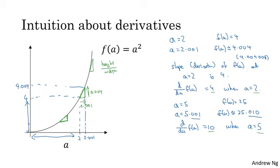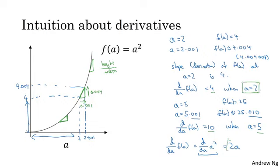If you pull up a calculus textbook, it will tell you that d/da of f of a — where f of a is equal to a squared, so that's d/da of a squared — is equal to 2a. One of the formulas you find in the calculus textbook is that the slope of the function a squared is equal to 2a. This is consistent with what we've worked out: when a is equal to 2, the slope 2a is 2 times 2, which equals 4. And when a is equal to 5, the slope 2 times a is 2 times 5, which equals 10.